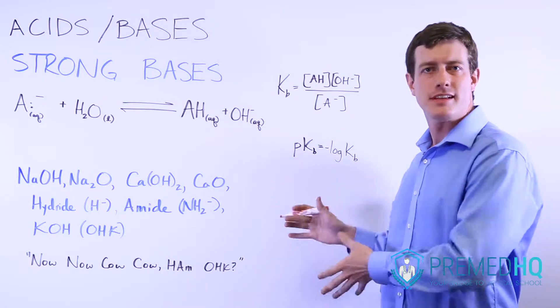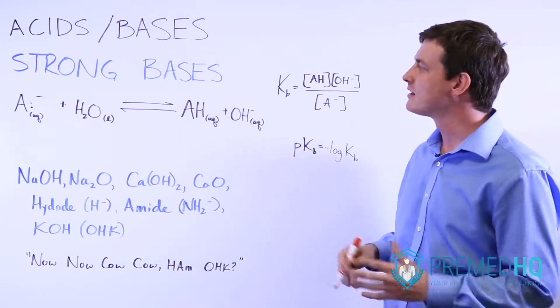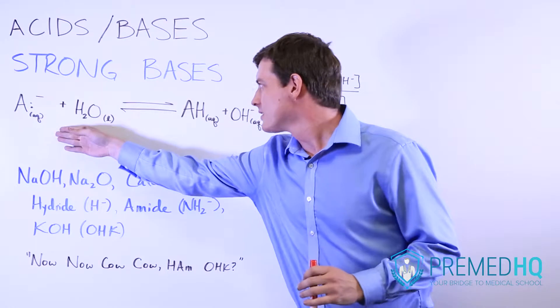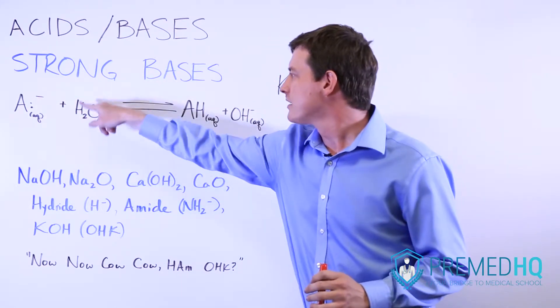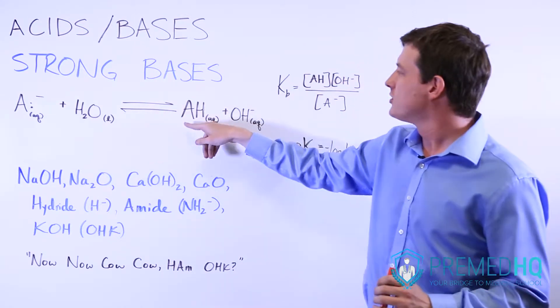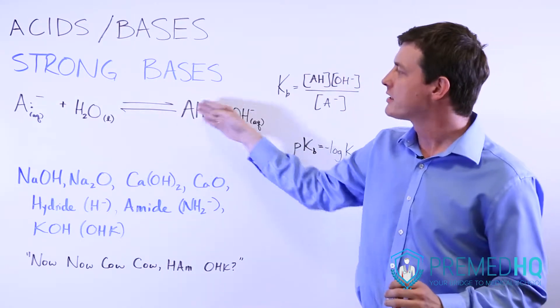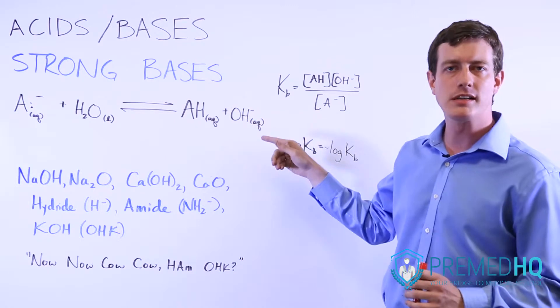Base strength can be examined in much the same way as acid strength. Here we have a generic base, which is just listed as A minus, which then connects with water and turns into AH, so it picks up that proton and yields an OH minus.